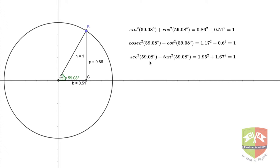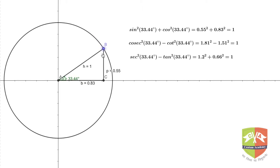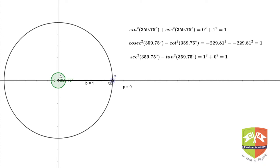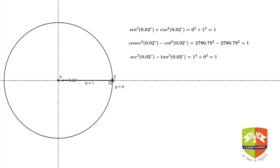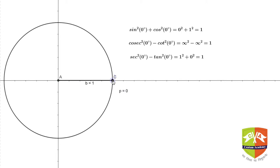What I'm going to do is start from the value of theta equal to zero. You can see now the value of theta is zero, and in this case all three identities are showing one.